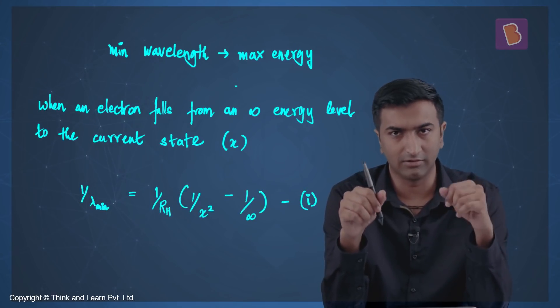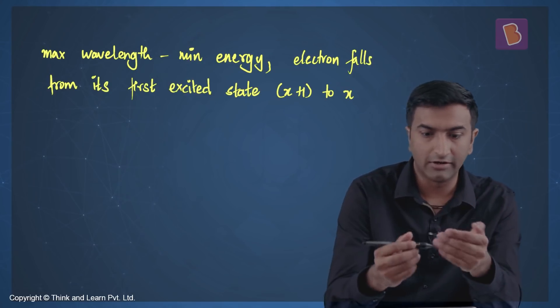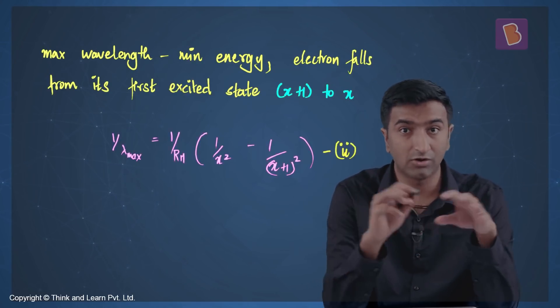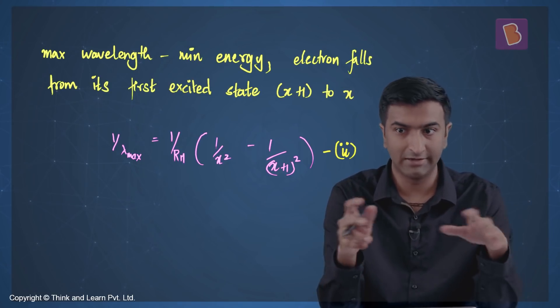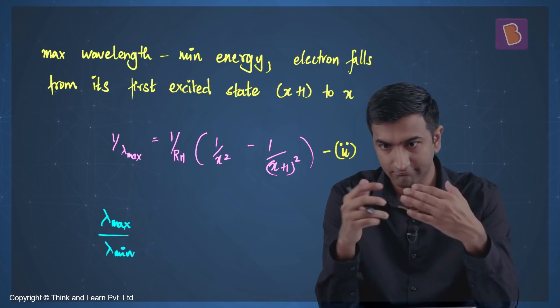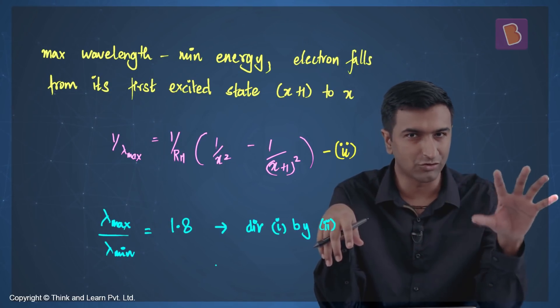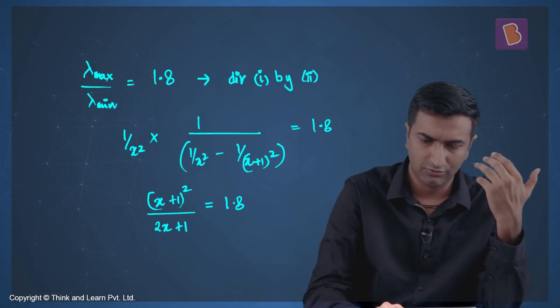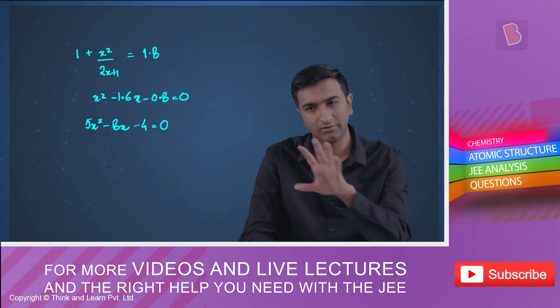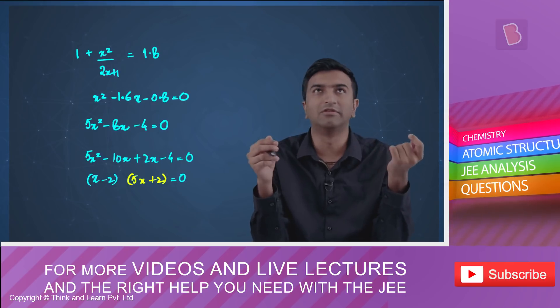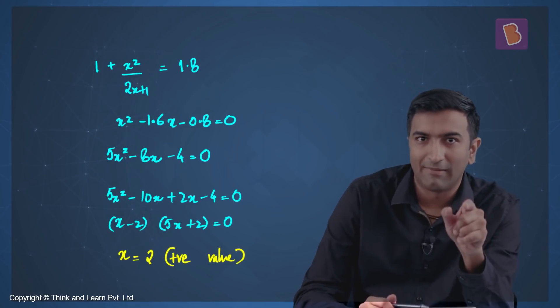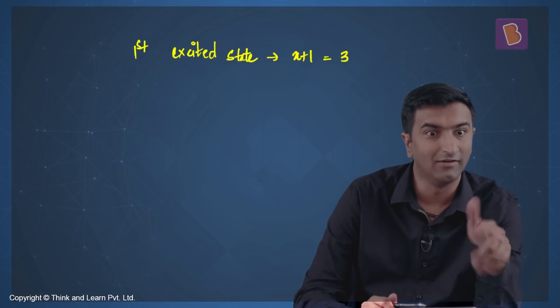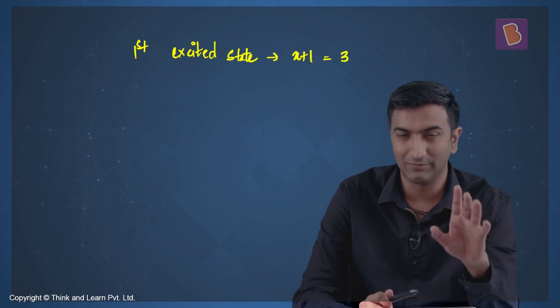For λmax, which corresponds to minimum energy, take it to the next energy level: the electron drops from x+1 to x. Put this into Rydberg's equation and you have two expressions in terms of just one variable x. Divide λmax by λmin and set it equal to 1.8. Simplify, factorize the quadratic — you get two roots: −0.4 (doesn't make sense) and 2. But the answer has to be the first excited state, so it's 2 + 1 = 3.